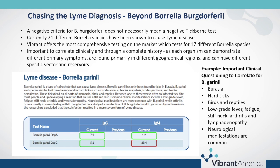Next we're going to talk about other Borrelia species. Borrelia burgdorferi is by far not the only Borrelia species causative for Lyme disease, and having a negative criteria for Borrelia burgdorferi doesn't necessarily mean a negative tick-borne test. There are currently 21 different Borrelia species that have been shown to cause Lyme disease. Vibrant offers the most comprehensive testing on the market and tests for 17 of those Borrelia species. It is very important to always correlate clinically through complete history, because each organism can demonstrate different primary symptoms, can be found in different geographical regions, and also have different specific vectors and reservoirs. Within your testing, at the top of each Borrelia species section, we will have that type of information listed.